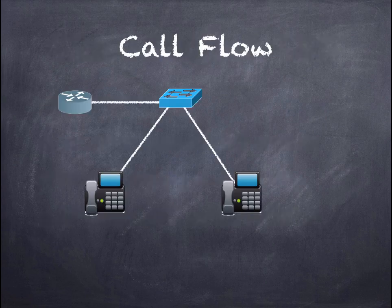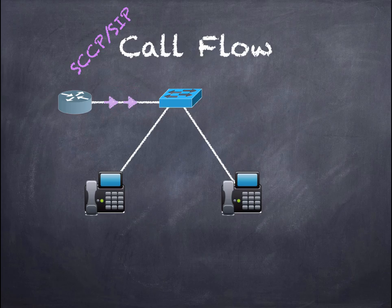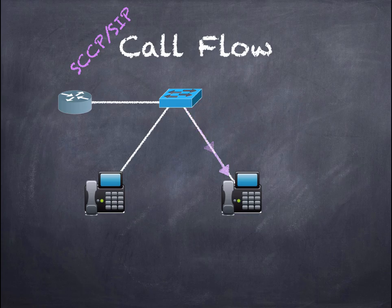I've drawn a simple network here to show the call flow. Let's first look at a call setup. The phone on the left tries to call the phone on the right using the SCCP or SIP call flow. The phone on the left dials the extension of the phone on the right, and instead of going directly to that phone, it goes to the Call Manager — in this case, Call Manager Express, which is our router. The router takes the call request and forwards it to the phone on the right, asking if it's available to receive a call. The phone on the right replies back with its availability — typically the on-hook or off-hook condition.